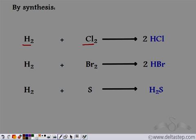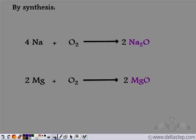Similarly we can also prepare bases by direct synthesis. So if you have to prepare sodium oxide, we take sodium and oxygen gas, and by direct combination of the two we get sodium oxide. Similarly for magnesium oxide, we take magnesium and oxygen, and their direct combination gives us the base magnesium oxide.